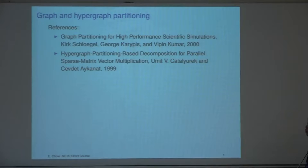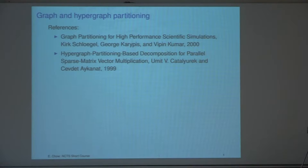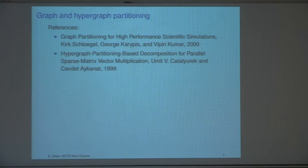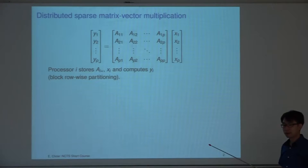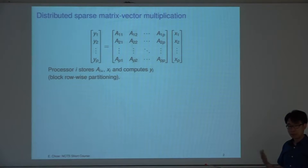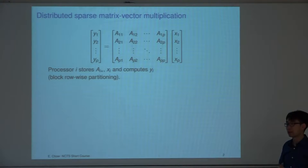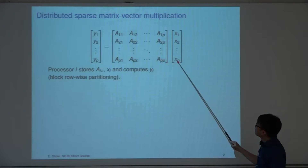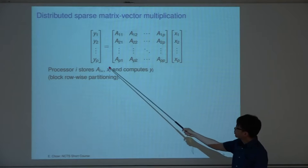Today I will use a set of slides. The topic is graph and hypergraph partitioning. Graph and hypergraph partitioning are traditionally thought of as methods for parallelizing sparse matrix-vector products. In parallel algorithms for solving sparse linear systems using iterative methods, one of the main operations that needs to be performed is the sparse matrix-vector product.